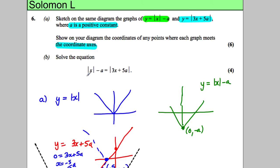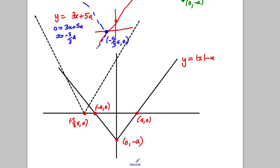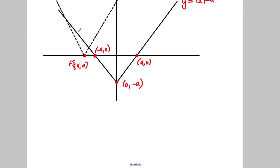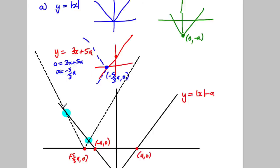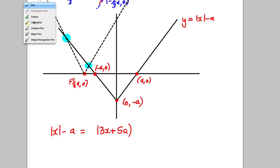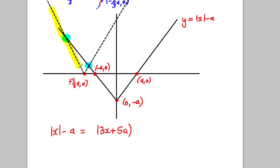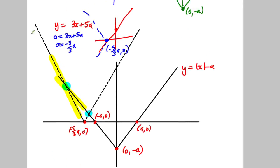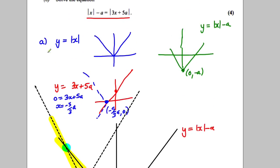We're asked to solve the two expressions equal to each other. From the picture we can see the solutions lie at two intersection points. We're solving modulus of x take away a equals modulus of 3x add 5a. We need to think about which portions of each graph correspond to each intersection.